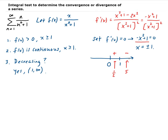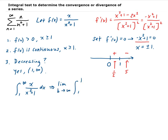All three conditions are met, so we can go ahead and apply the integral test. We're going to set up the improper integral to see whether this integral is converging or diverging. We write this as the limit as b goes to infinity of the integral from 1 to b of x over x squared plus 1.